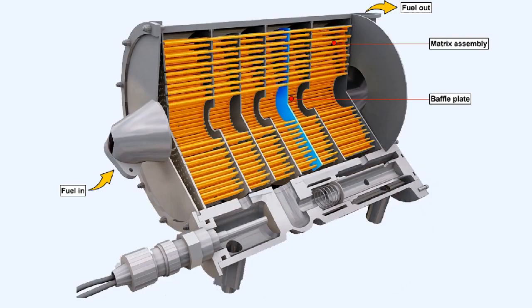Whether fuel-cooled or air-cooled, the oil cooler is basically a radiator which exchanges heat from one medium to another. The oil cooler consists of a matrix assembly which is partitioned by baffle plates. The baffle plates ensure that the oil takes the longest path through the matrix and thus gains maximum benefit from the cooling effect of the fuel flowing through the tubes within the matrix.